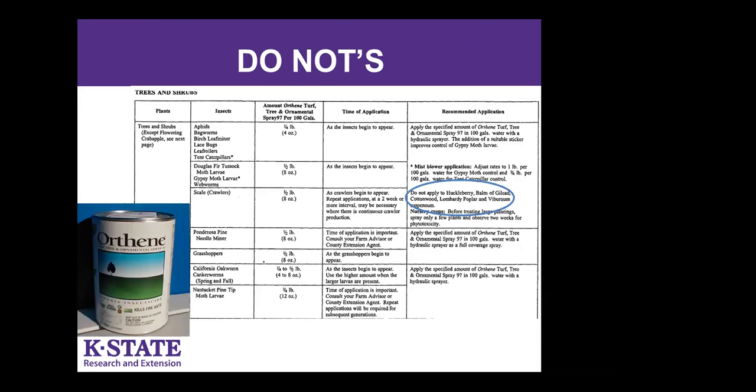Another thing to note on labels is oftentimes there are 'do nots.' This is Orthene insecticide, commonly used for insect control in trees and shrubs. In the application information, it tells you not to use it on cottonwood, Lombardy poplar, or viburnums due to possible problems with toxicity. If you did not read the entire label, you might damage the very plants you're trying to protect.